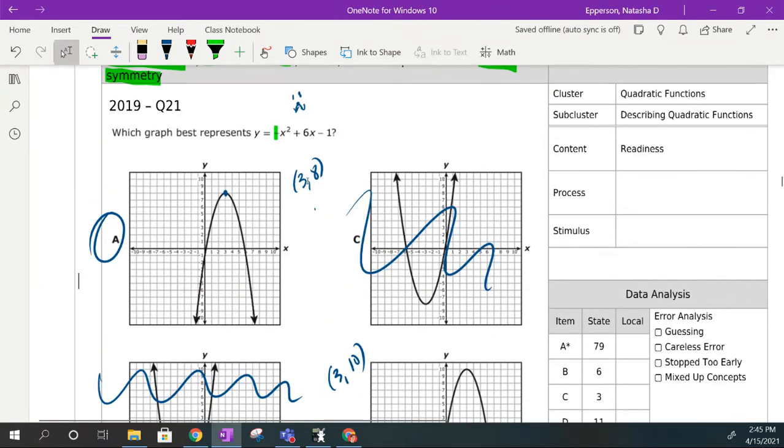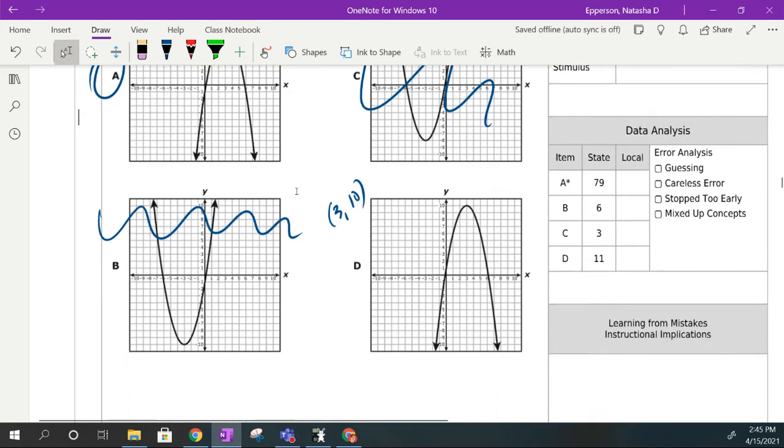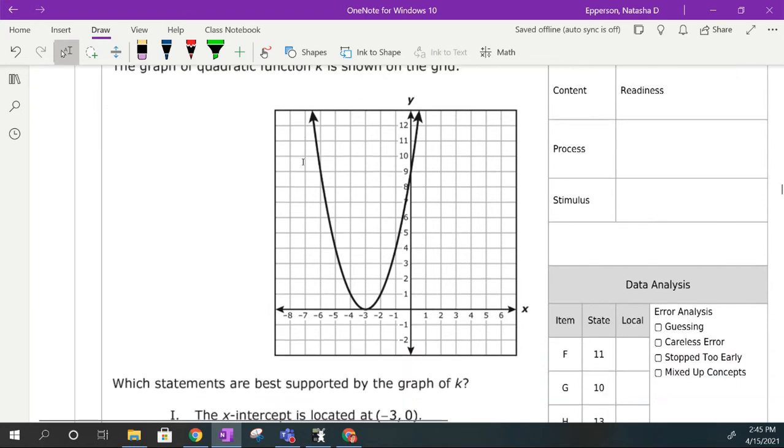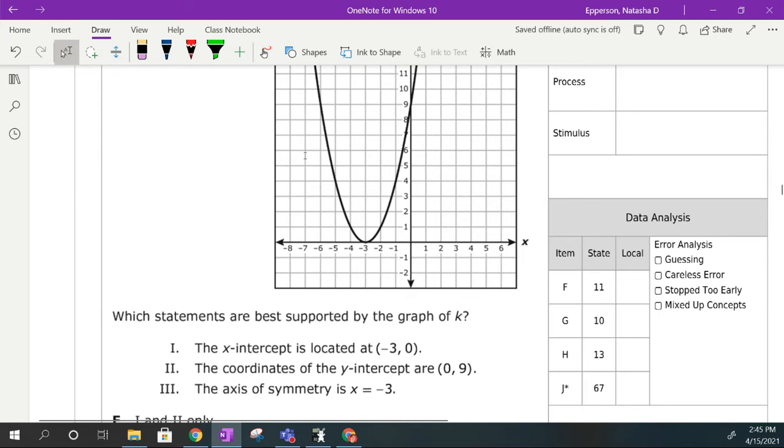You could have also plugged in 3 for x, since both of these have an x value of 3, and then solve it from there. Number 46. We're given this quadratic equation shown on the grid. We want to see which of these statements best supported by graph of A.